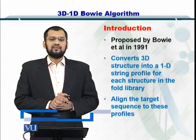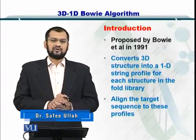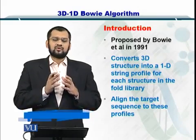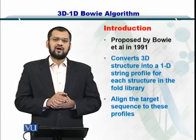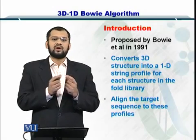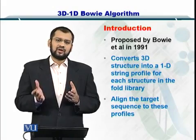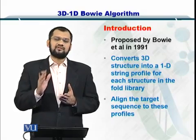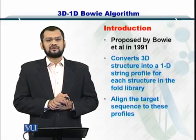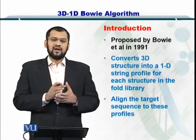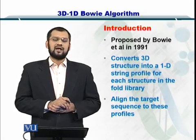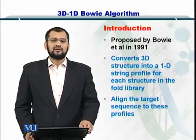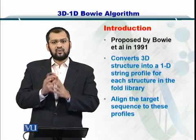Now, towards the 3D-1D Bowie algorithm. This was proposed by Bowie et al. in 1991. What it does is convert the 3D structural profile of a protein structure into a 1D array. You can then compare this 1D array to all the amino acids within the sequence for which you want to predict the structure. If you get a very good match, you can declare that structure and successfully predict it.